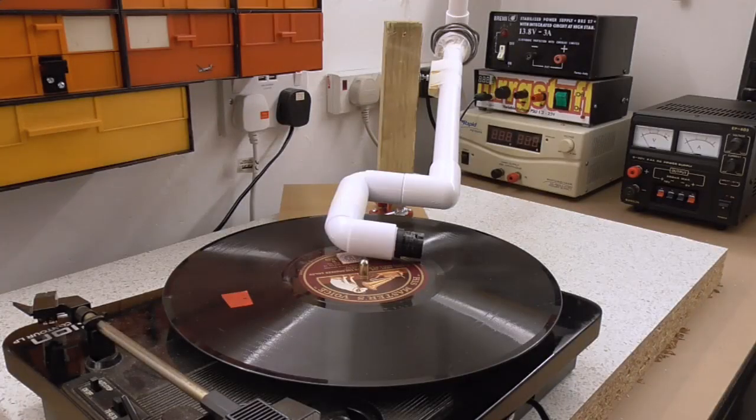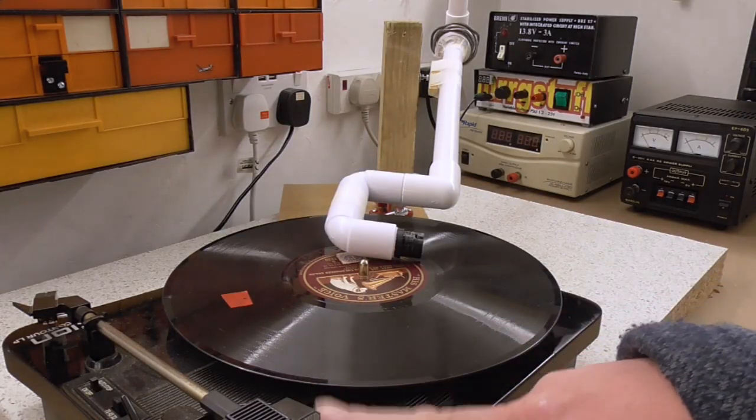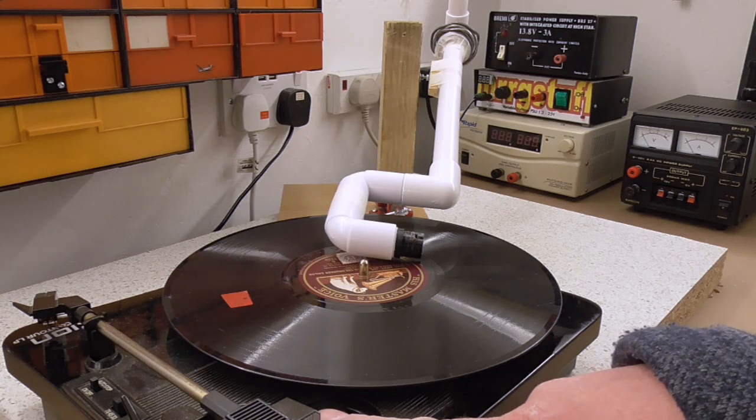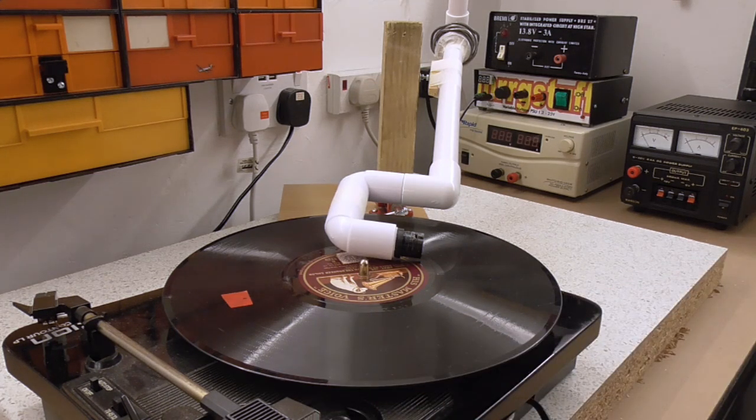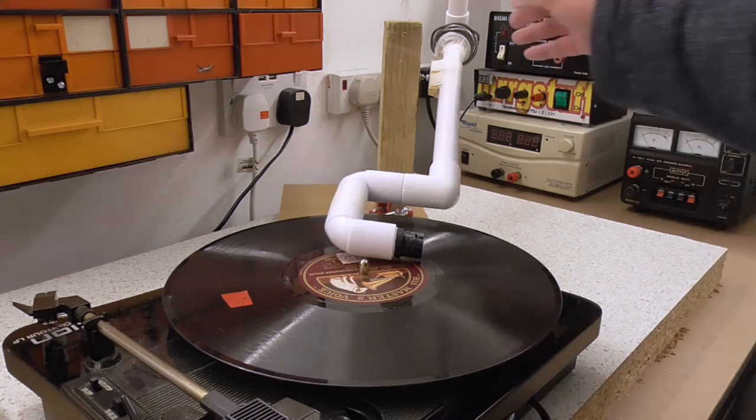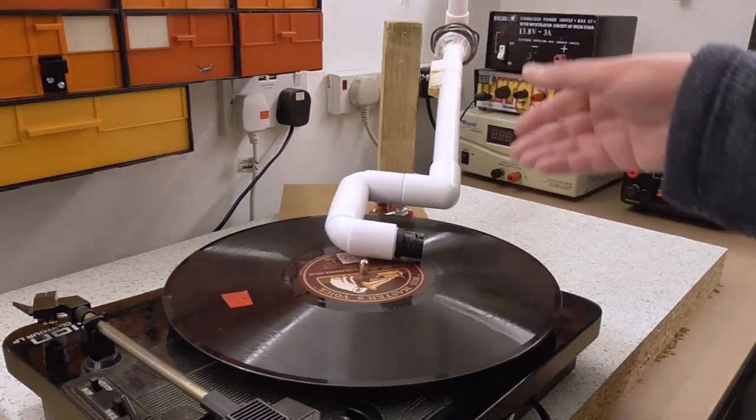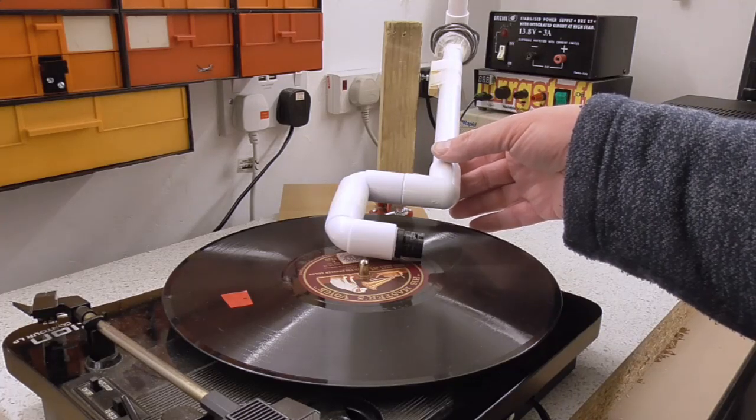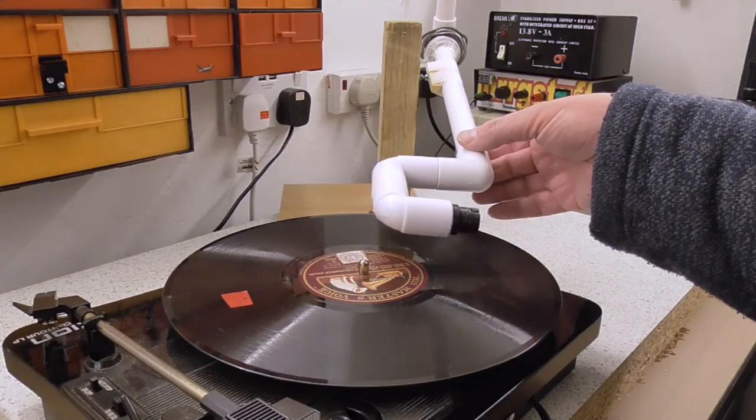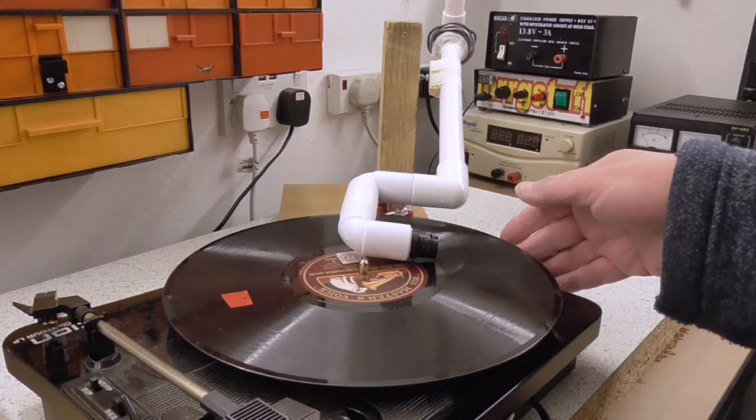I ought to mention that of course I'm using this old record player—it's an old iron turntable—as the turntable for this homemade gramophone. Now it's one of the reasons that I've got the weight on the end of the arm here, because actually it's not a very powerful motor and too much weight via the needle just causes the record player to stall.